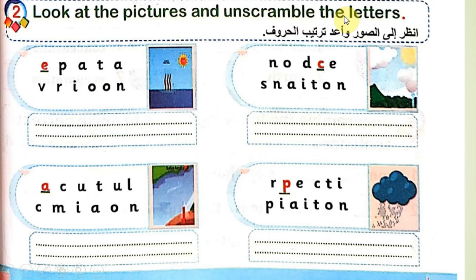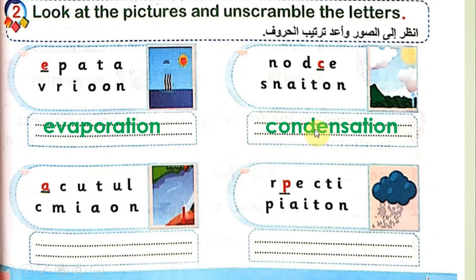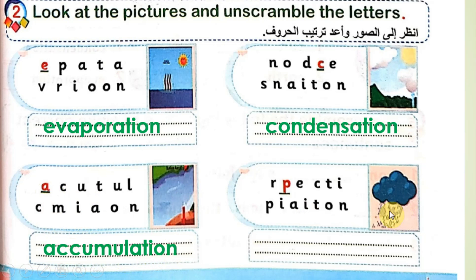Activity 2: Look at the pictures and unscramble the letters to make correct words. First picture starts with E — this is evaporation. Next picture shows clouds starting with T — this is condensation, write C-O... condensation. Next picture shows a river with water — this is accumulation, starting with A: A-C-C-U-M-U-L-A-T-I-O-N. The last picture shows falling rain — this is precipitation, starting with P: P-R-E-C-I-P-I-T-A-T-I-O-N. Memorize these words well, with correct pronunciation and spelling.